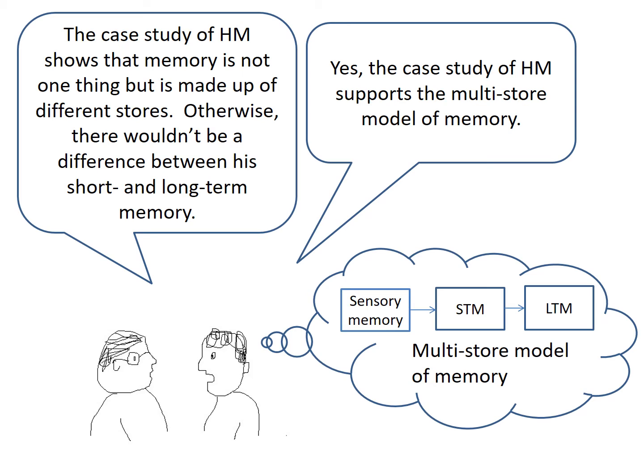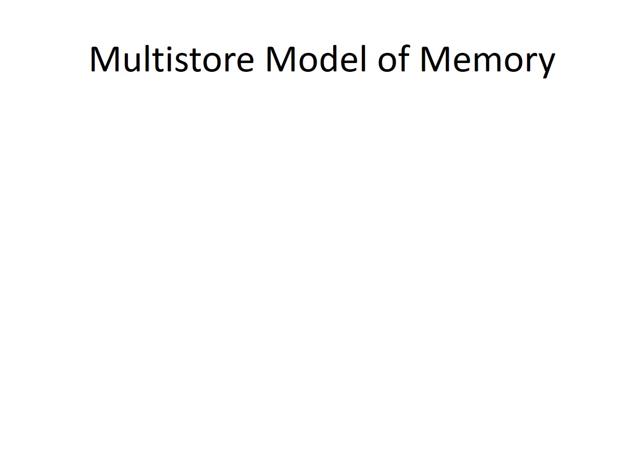The multi-store model of memory says that memory is made up of different stores: sensory memory, short-term memory, and long-term memory. So, let's look at the multi-store model of memory in a little bit more detail.